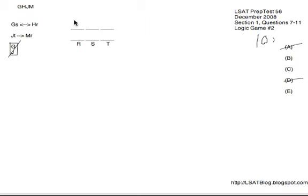So looking at B, G and M. Could we have G and M on both R and T? Well, if we did, we'd have to have H and J together on S. And so that actually works perfectly fine. Doesn't activate the JT then MR rule. It doesn't have either GS or HR occurring. And G and J are not together. Therefore, we're totally good. And B is our answer for 10. I will look at the other choices though.